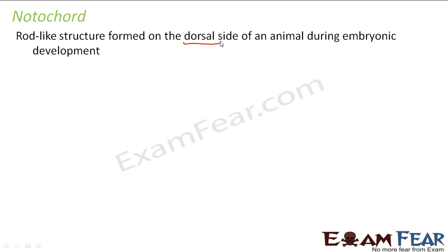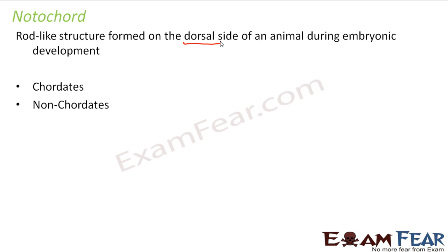The presence or absence of notochord helps in classifying organisms in the animal kingdom, because it is not present in all animals. In some it is present throughout the lifetime, while in others it is present only during embryonic stages but absent in the adult. Depending on the presence or absence of notochord, the animal kingdom is divided into two types: chordates, where notochord is present, and non-chordates, where notochord is absent.